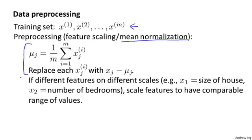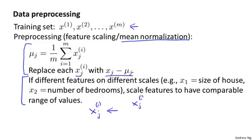For mean normalization, we first compute the mean of each feature, and then we replace each feature x with x minus this mean, so this makes each feature have exactly zero mean. Second, if the different features have very different scales — for example, if x1 is the size of a house and x2 is the number of bedrooms — we then also scale each feature to have a comparable range of values. We take x_i subscript j, subtract off the mean, and divide by s_j, where s_j is some measure of the range of values of feature j, such as the max minus min value, or more commonly, the standard deviation of feature j.